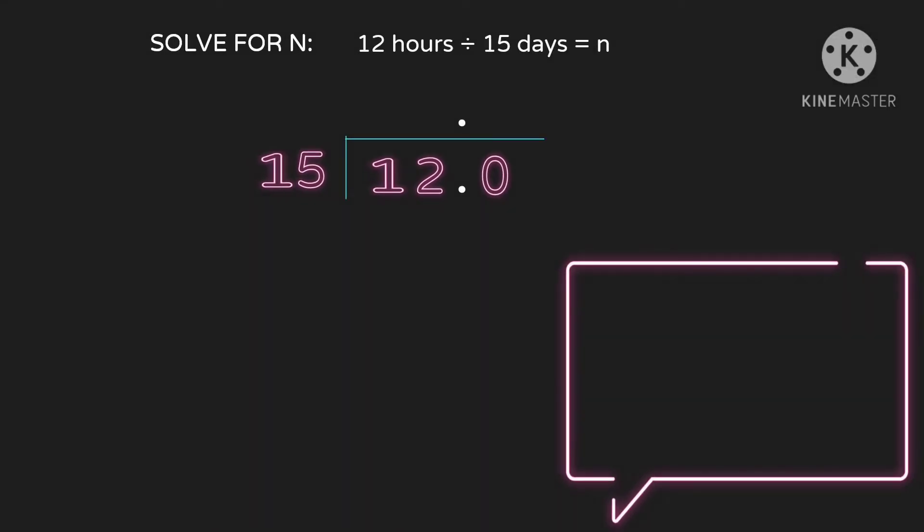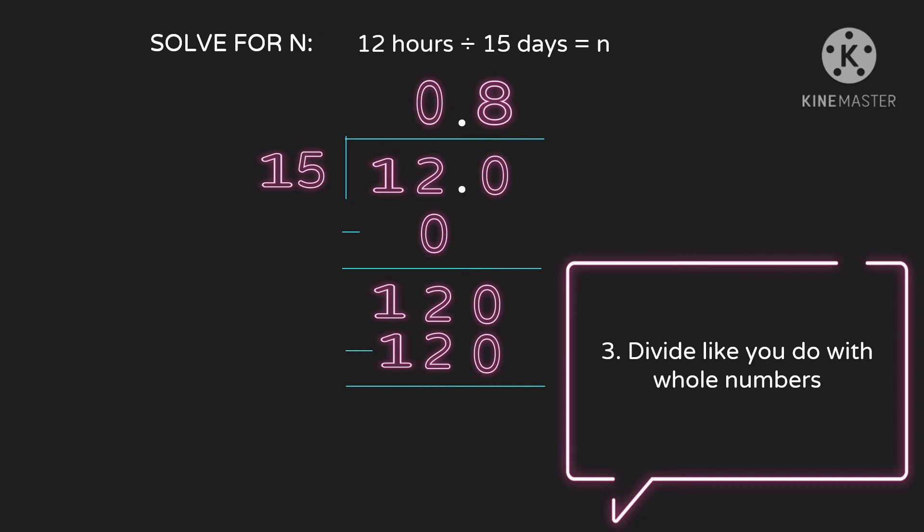Let's do the third step. Divide like you do with whole numbers. First, divide 12 by 15. How many 15s in 12? Zero. Then 0 times 15 is 0. Get the difference, 12 minus 0 is 12. Bring down 0. So 120 divided by 15. How many 15s in 120? We get 8. Multiply 8 times 15 is 120. The difference is 0. The quotient we get is 8 tenths.